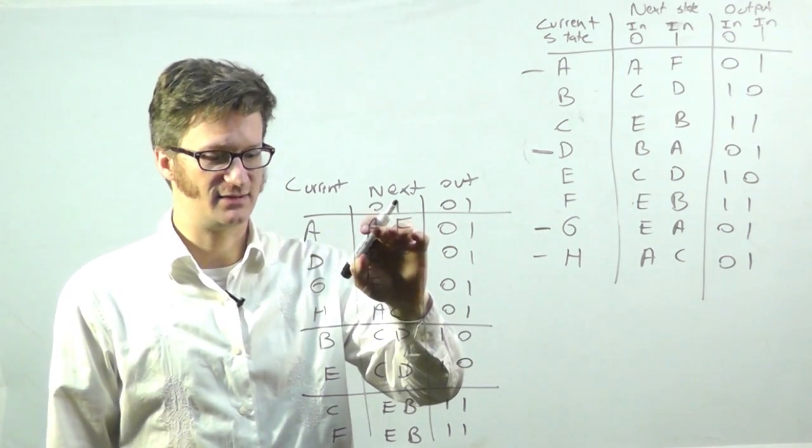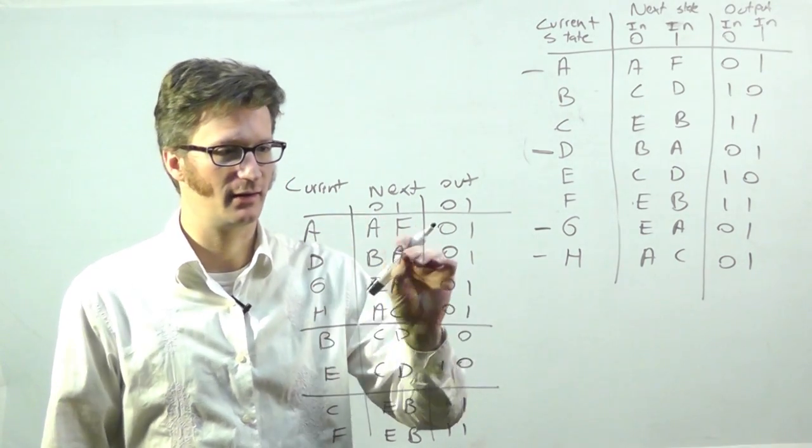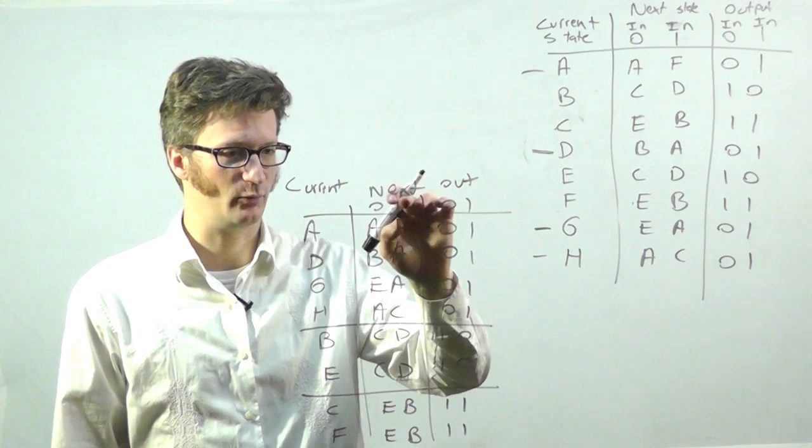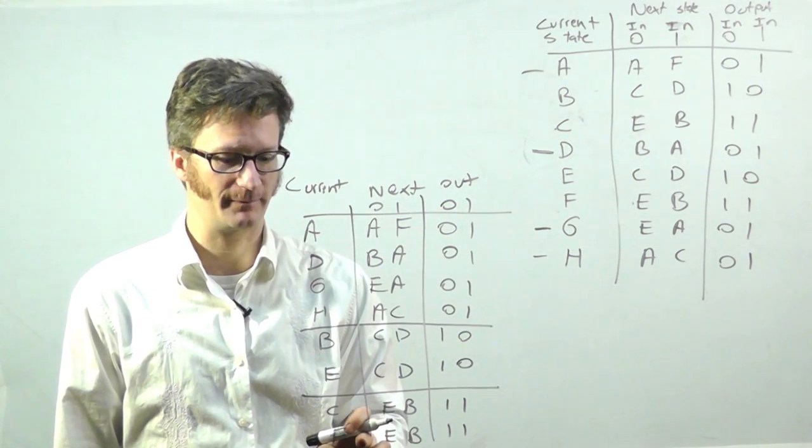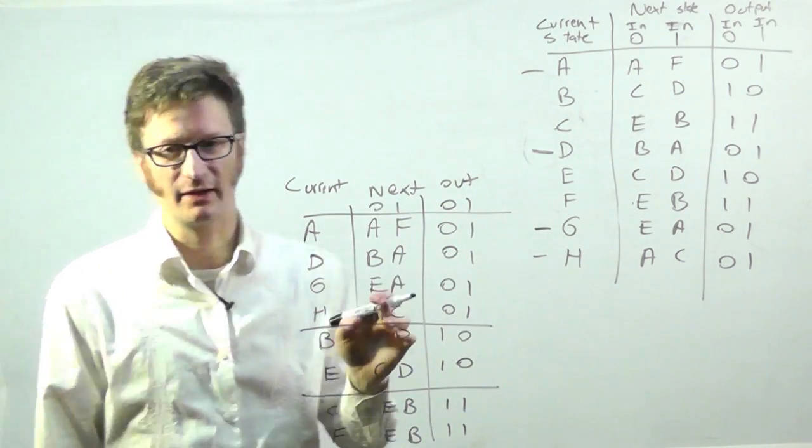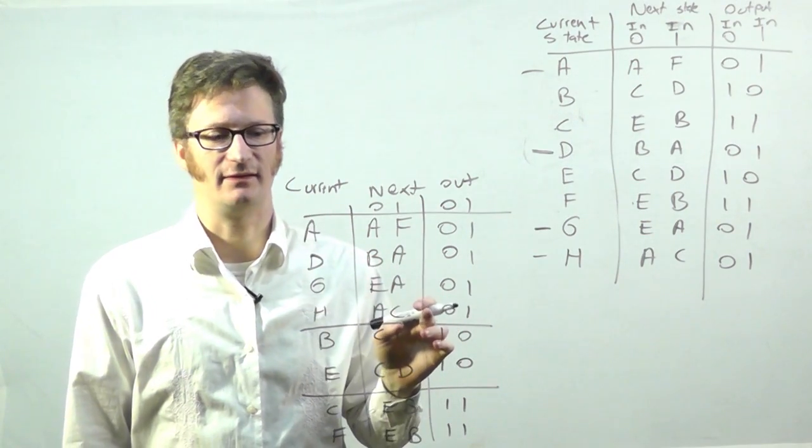So in this case, for A, it's jumping to this group here. And for one, it's jumping down to this group here. And I'm looking for states that don't do that.